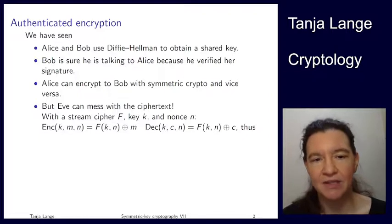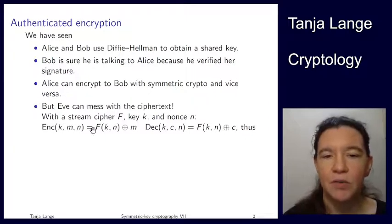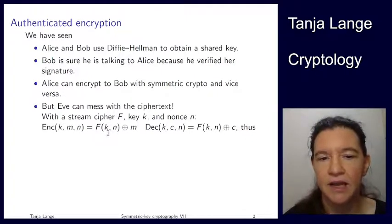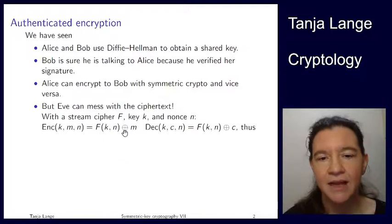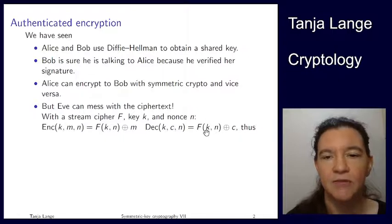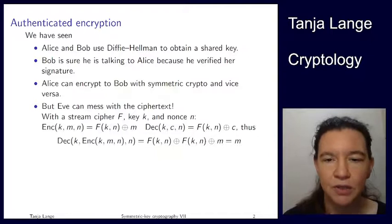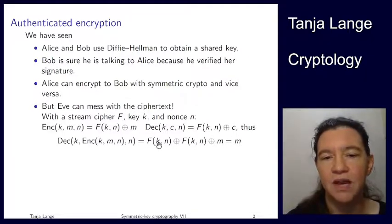Eve can mess with the ciphertext when you look at stream cipher encryption. With a stream cipher, the encryption takes the stream — generated from key k and nonce n by some cipher function f — and then XORs the message to it. This is a local operation and very efficient. The decryption side computes the same function with the same k and nonce, XORs the ciphertext, and the two stream cipher parts cancel to zero, leaving the message.